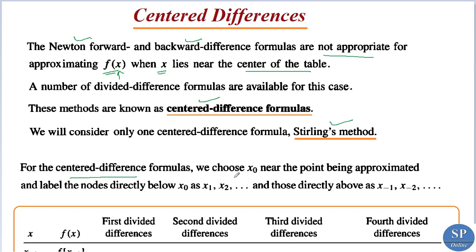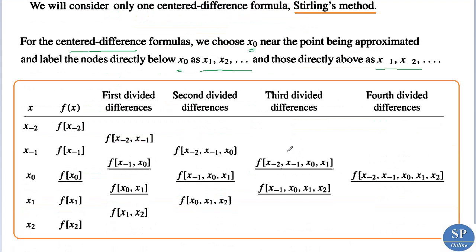For the center difference formula we choose x₀ near the point being approximated, and label the nodes directly below x₀ as x₁, x₂, etc., and those directly above as x₋₁, x₋₂, etc. That means if we need to approximate f(x) where x lies near the center, we choose x₀ near the point we have to approximate. The points below are denoted x₁, x₂, x₃, etc., and those above x₀ are denoted x₋₁, x₋₂, etc.